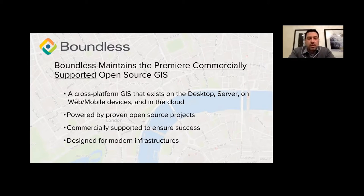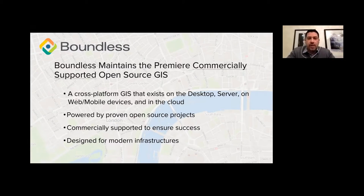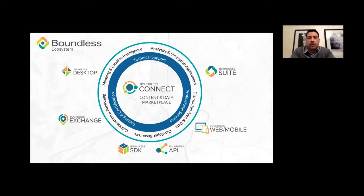If you are an organization with an operational use case, you can feel comfortable that leveraging the Boundless distribution of that software is commercially supported, and that you'll have someone to call if you run into issues. What's unique about our stack is it's designed for modern IT architectures. A lot of traditional geospatial software is designed for older Windows-based environments or bare metal servers, whereas the open source stack was born to work inside a containerized architecture, DevOps architecture, using Ansible and Chef to script out microservice deployments to crunch numbers and then spin back down when you don't need it anymore.